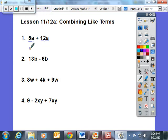When you combine these two terms, the answer is 17a. Next we can also do subtraction. If you visually think about having 13 of the letter B and taking six of those B's away from that, your answer for this will be 7b.